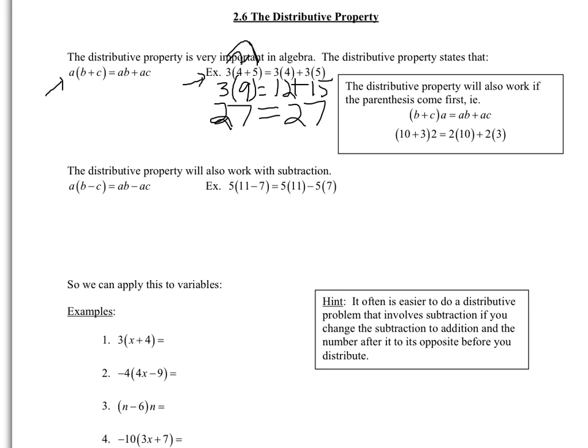Realize that you might see the parentheses come first and then a number afterwards — that still works as well. Remember, a number or variable right next to parentheses still means multiplication. So you're taking that number on the outside, like the 2 in this example, and multiplying it by each number inside the parentheses.